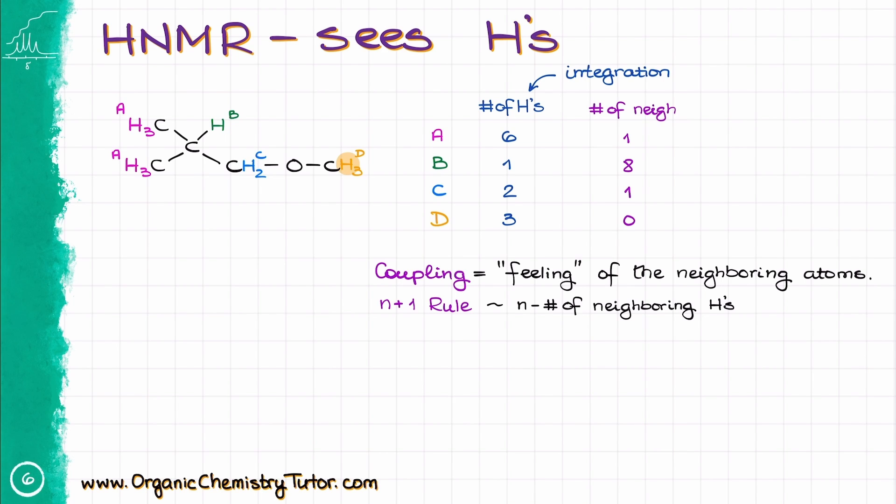Well, I mean technically it has an oxygen, but since oxygen doesn't have any hydrogens on it, we are going to say that group D has no neighbors. Which means that now we can determine the multiplicity of our signals using the N plus 1 formula, where N is the number of neighbors for each group,